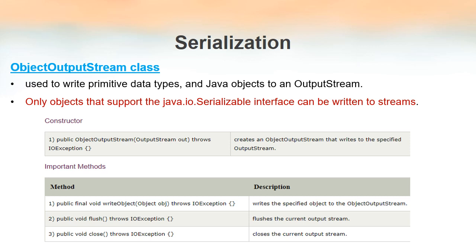The responsibility of this constructor is to create an ObjectOutputStream object that writes to the OutputStream, and the OutputStream we have to write to is the parameter that we give. These are some of the methods available inside this class. We have one method named WriteObject, where we give one parameter — the object that we have to write to the OutputStream. We have another method flush, which is used to flush or clear the current OutputStream. And void close, which is used to close the OutputStream.